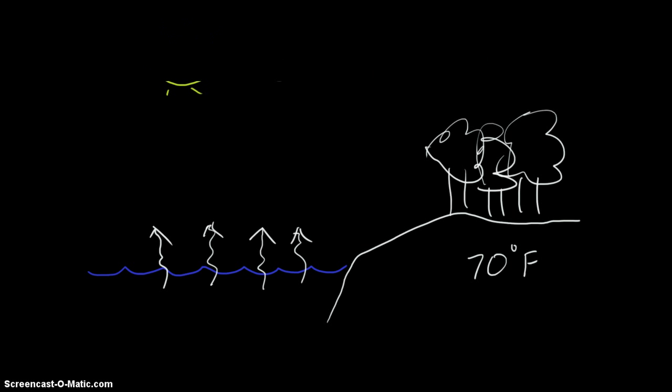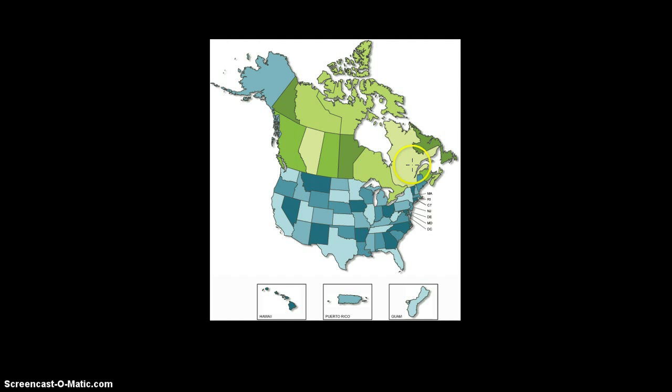And then, to give you an example of different areas, let's say, let me get a different color here. Let's say we talk about the Florida area, or maybe even Southern California. Those would be examples of hot and humid areas, right?